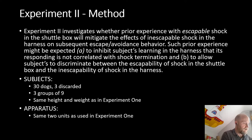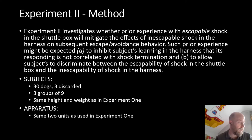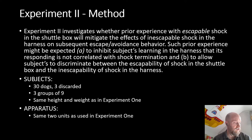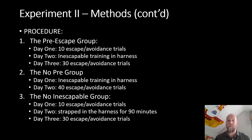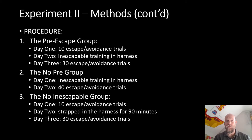Again 30 dogs were used, three discarded, leaving 27 dogs randomly assigned to three groups of nine. The apparatus is exactly the same as Experiment One — it's just the order and delivery that differs. The three groups are called the pre-escape group, the no-pre-escape group, and the no-inescapable group. The nomenclature is a little confusing, so let's break down what each group went through.